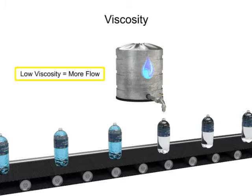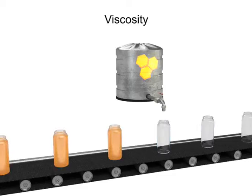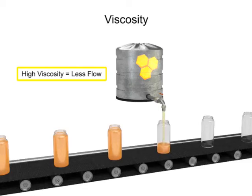Fluids with low viscosity flow very easily. Water is a type of fluid with low viscosity. Fluids with high viscosity are more resistant to flow. Honey is a type of fluid with a high viscosity. Therefore, honey is more viscous than water.